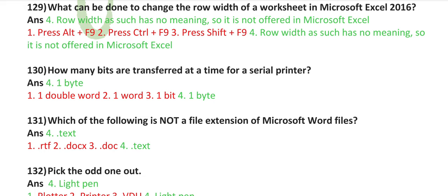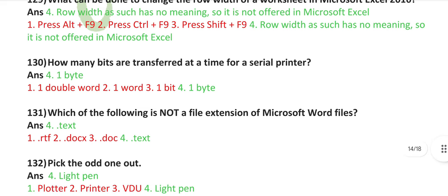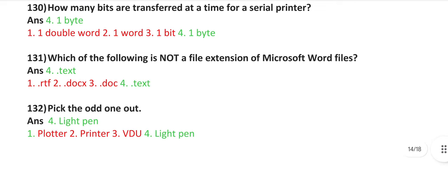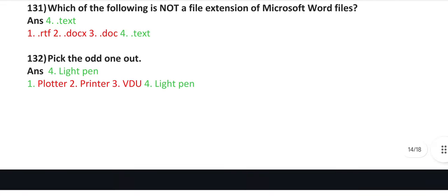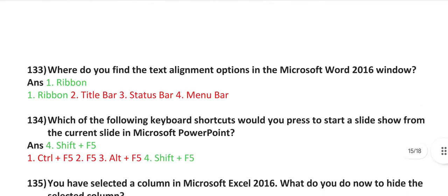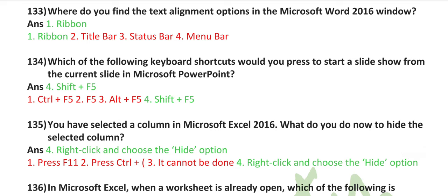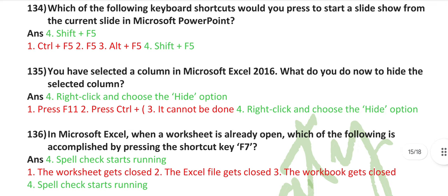How many bits are transferred at a time for a parallel printer? 8 bits. Which of the following is not a file extension of Microsoft Word files? .text. Pick the odd one out: light pen. Where do you find the text alignment option in the Microsoft Word 2016 window ribbon?